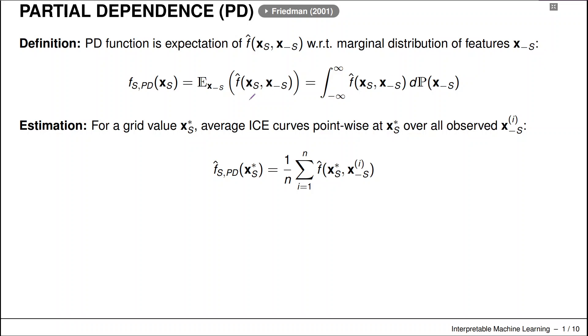And what we now are going to do is we're just going to average out for a given value of xs. So let's maybe say xs is just one. And we want to compute the partial dependence value at xs equals one. So we are looking for the average predicted outcome if we average out over all of these remaining features.